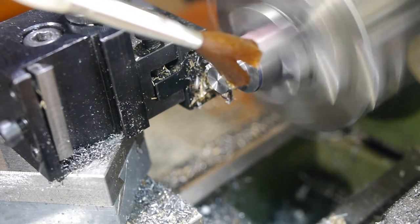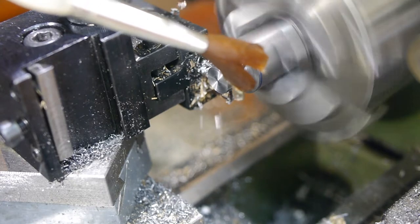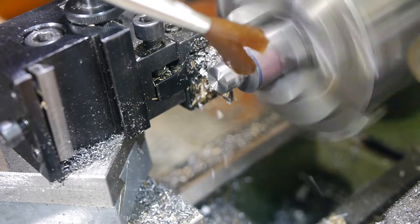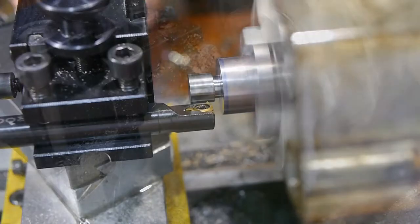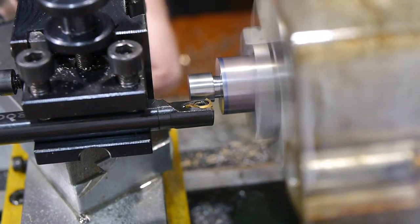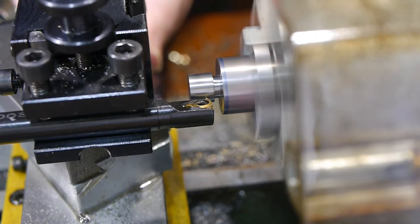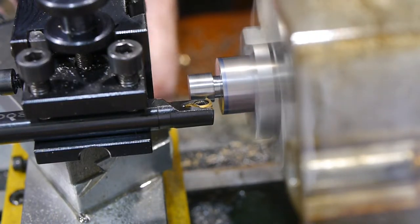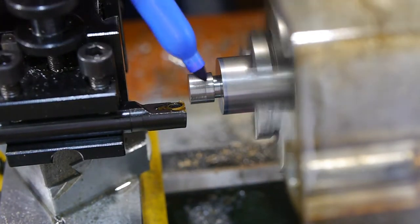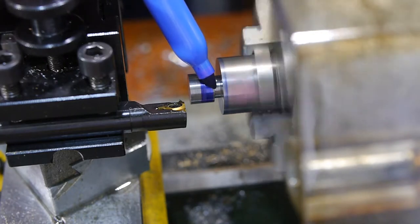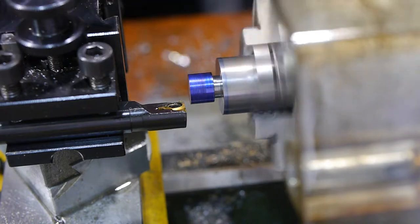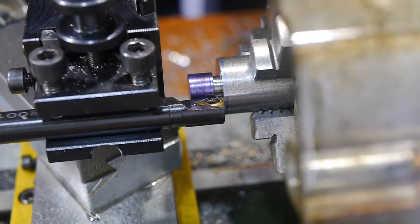First I cut a groove at the back of the thread with a parting tool. This is where the threading tool will start, and it also ensures the other part can screw tightly against the shoulder. I then used the thread tool to touch off the outer diameter and zero the dials on both the cross slide and the compound. Coloring the surface with a Sharpie ensures the first pass will be very visible to check it has the correct pitch.